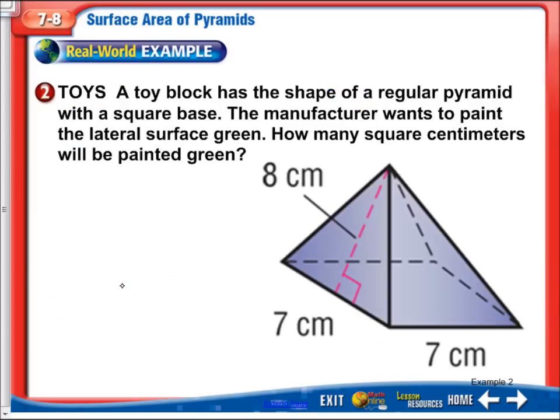So toys, a toy block has the shape of a regular pyramid with a square base. The manufacturer wants to paint the lateral surface green. How many square centimeters will be painted green? So they just want the lateral surface area. We don't need to worry about the area of the base. So we're just going to do surface area. It's going to be our perimeter times our lateral height. That's it.